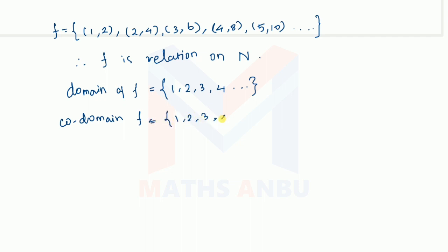The range — we have to look at the image values. The range values are 2, 4, 6, 8 and so on — that is, the even numbers. So range equals {2, 4, 6, 8, ...}.